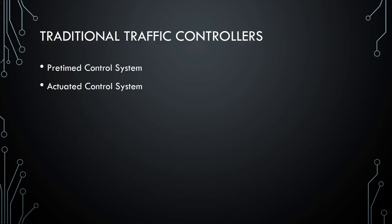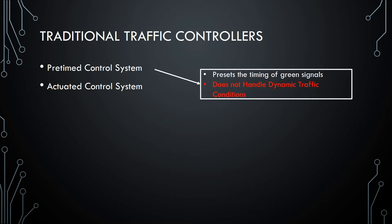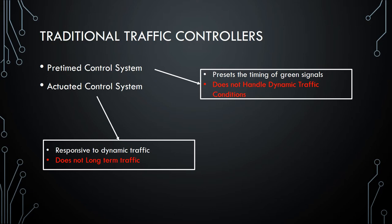The current traffic controllers are either pre-timed control or actuated control systems. Pre-timed control systems have a preset of timings on green light — a longer green light duration during peak hours and a shorter duration during afternoons or late nights. Unfortunately, it fails to handle dynamic traffic conditions like that of a football match across the city during afternoons. Next is actuated control systems which is responsive to dynamic traffic but does not really serve well in long-term traffic scenarios.